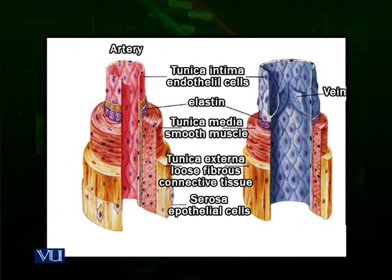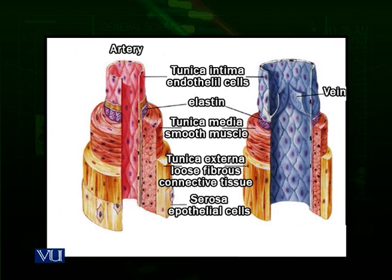Let us look at two diagrams comparing the structure of an artery and a vein. There is an artery on the left and a vein on the right. You can see that the lumen of the artery is smaller and the lumen of the vein is larger. Inside the artery there are no valves, but inside the vein there are valves — flaps of endothelium membrane that can close the vessel. The second layer is the middle layer of muscles. In an artery the muscle layer is thick, and in the vein it is comparatively thinner, because arteries need to handle more pressure changes.